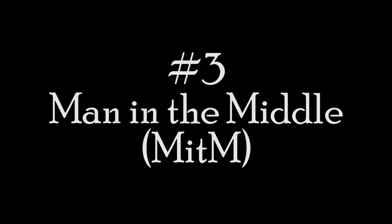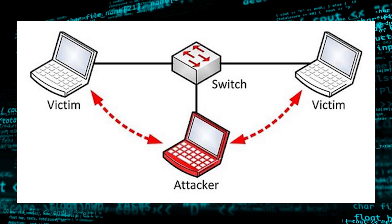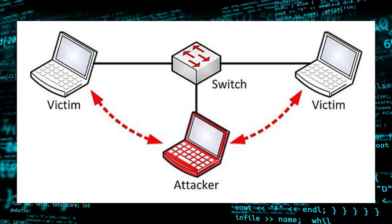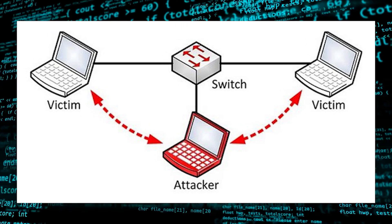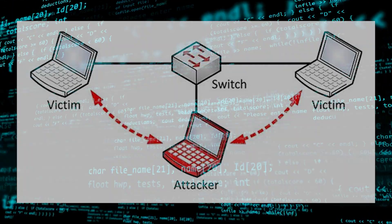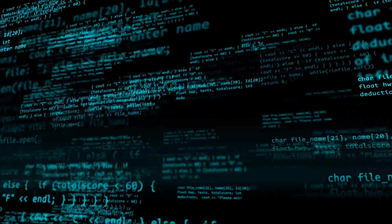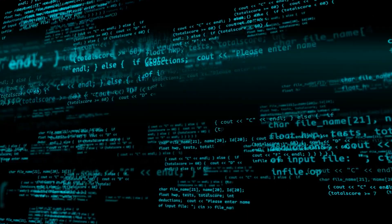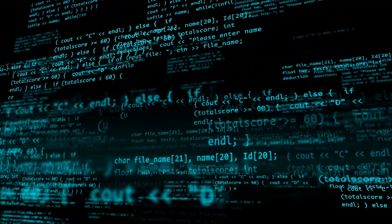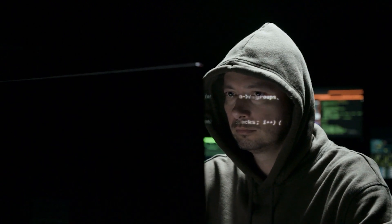Number three: man-in-the-middle attacks. These occur when an attacker intercepts a two-party transaction or conversation, inserting themselves in the middle. From there, the attackers can steal and manipulate data by interrupting, manipulating, and recording traffic. This type of attack usually exploits security vulnerabilities in a network, such as unsecured public Wi-Fi, to insert themselves between a visitor's device and the network. The problem with this kind of attack is that it's very difficult to detect, as the victim thinks the information is going to a legitimate destination. Phishing or malware attacks are often leveraged to carry out a man-in-the-middle attack.